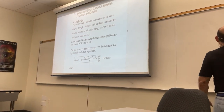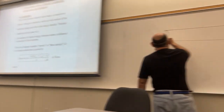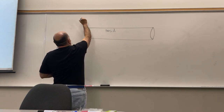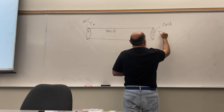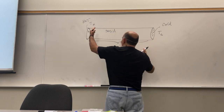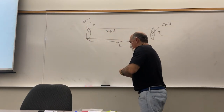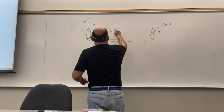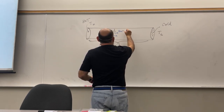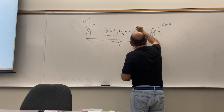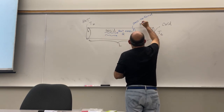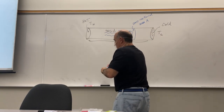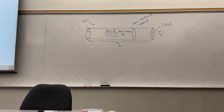Consider a solid rod where one end is kept at temperature T sub H (hot) and the other at T sub C (cold), with separation distance L. The thermal energy conducted through a cross-sectional area — that is the heat energy Q — gives an expression for the power conducted through that cross-sectional area per unit time.